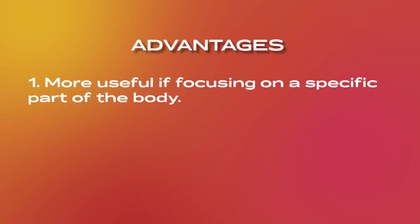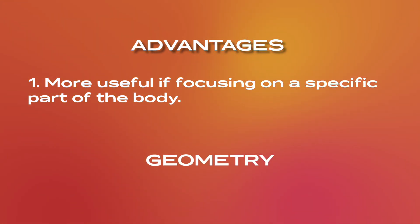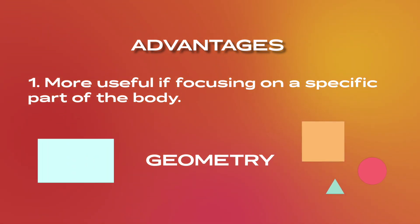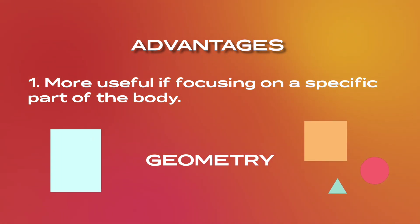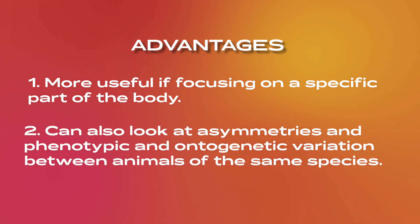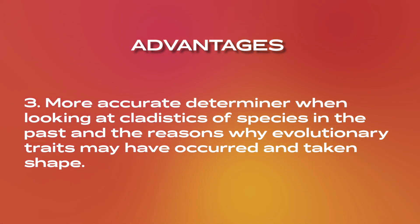And that's basically it! But of course, all studies have advantages and disadvantages. Unlike DNA barcoding, geometric morphometrics is more focused on geometry — including lengths, widths, and shapes among certain landmarks — which can be more useful when focusing on a specific part of the body. It can also examine symmetries, and phenotypic and ontogenic variation between animals of the same species. Paleontologists will also agree that geometric morphometric analysis is a more accurate determiner for cladistics of past species and why evolutionary traits may have occurred.